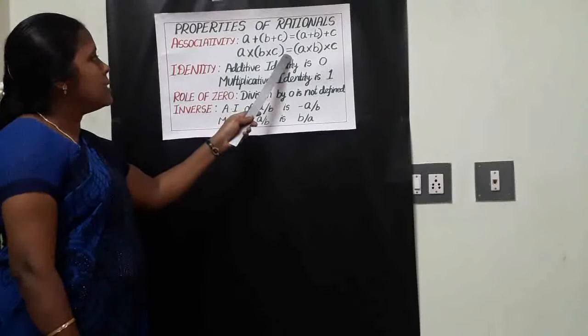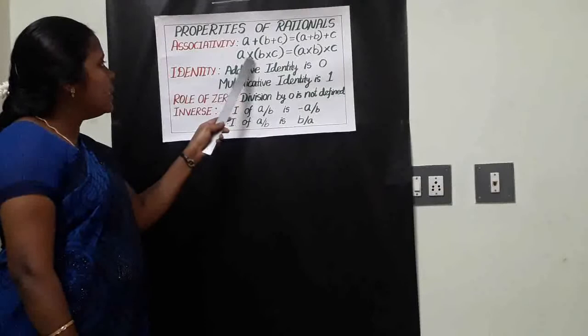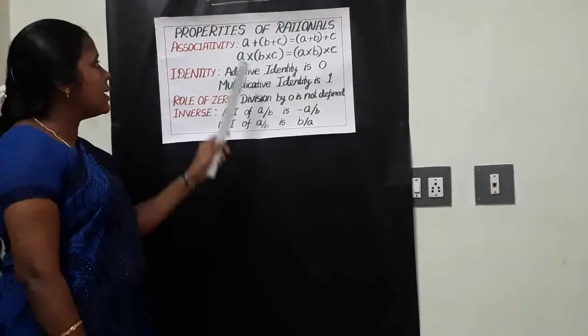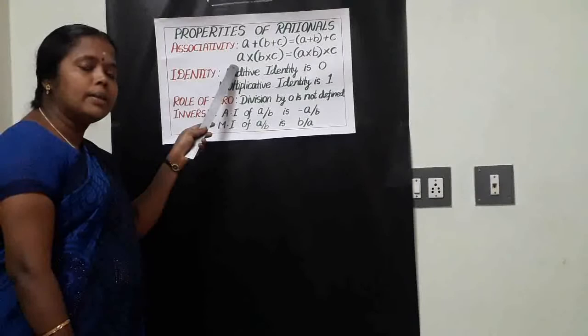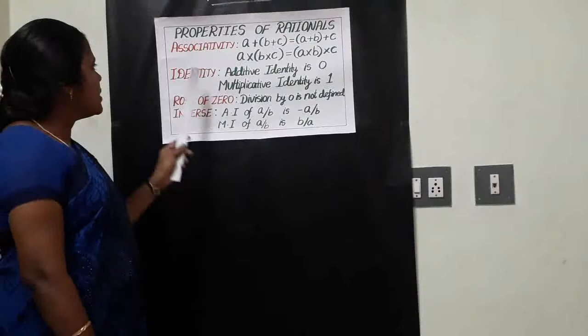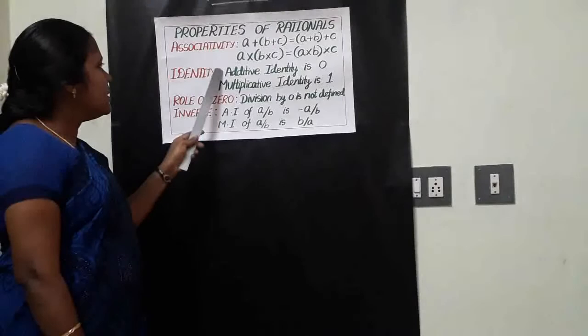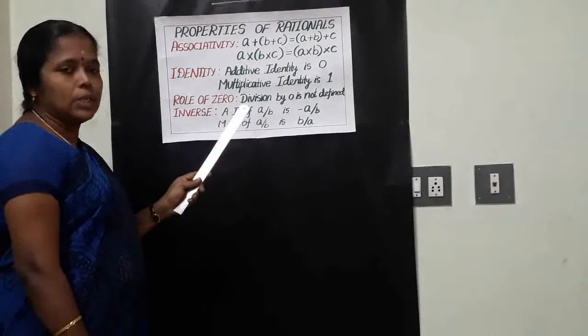Second, under multiplication: a times (b times c) is equal to (a times b) times c. This means we can multiply rational numbers in any order. Next property is identity. There are two cases: one is additive identity, and another is multiplicative identity.